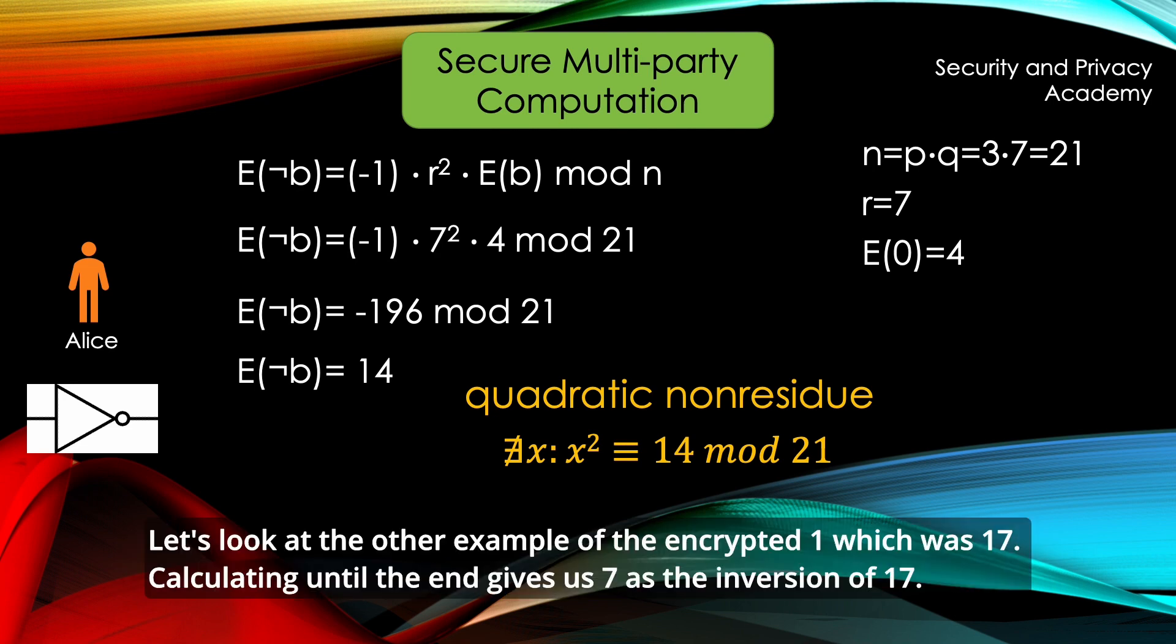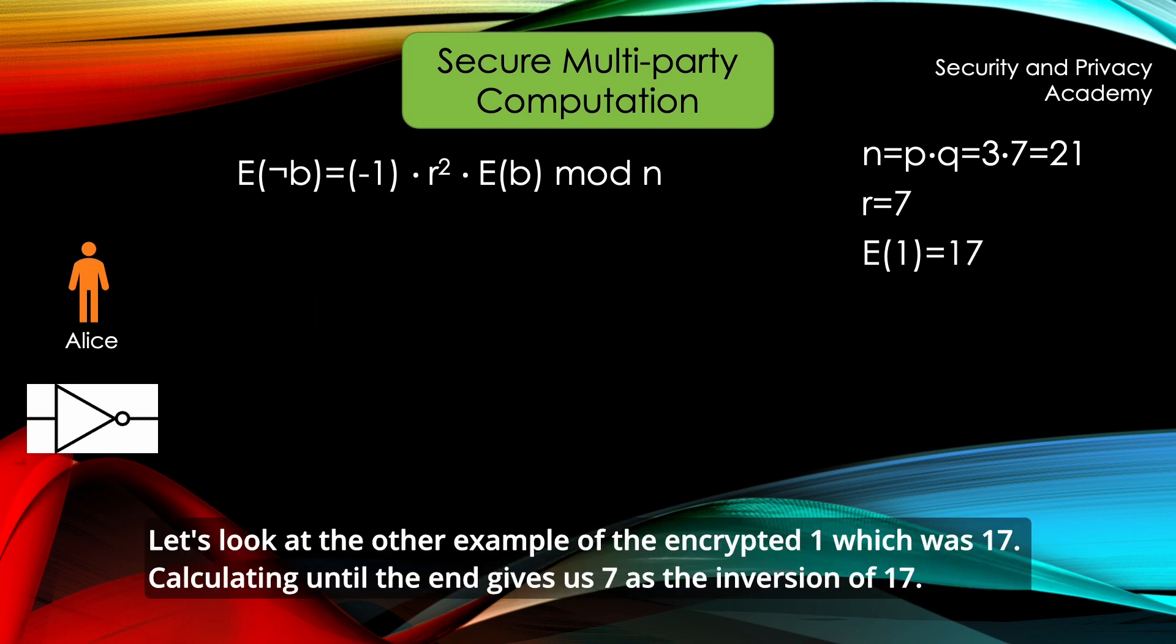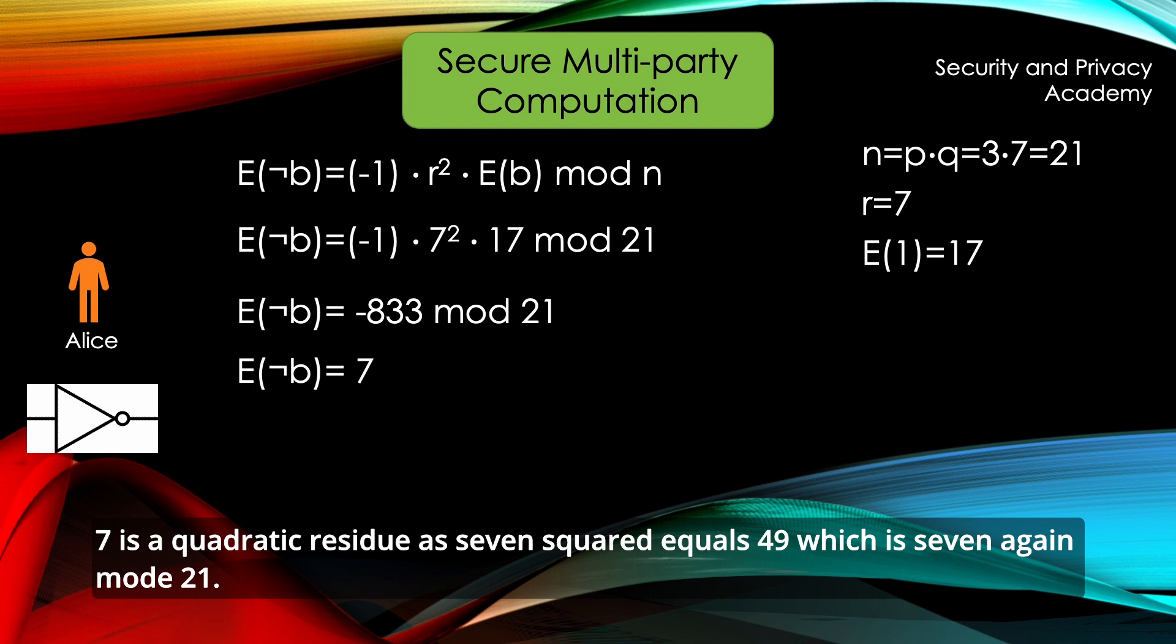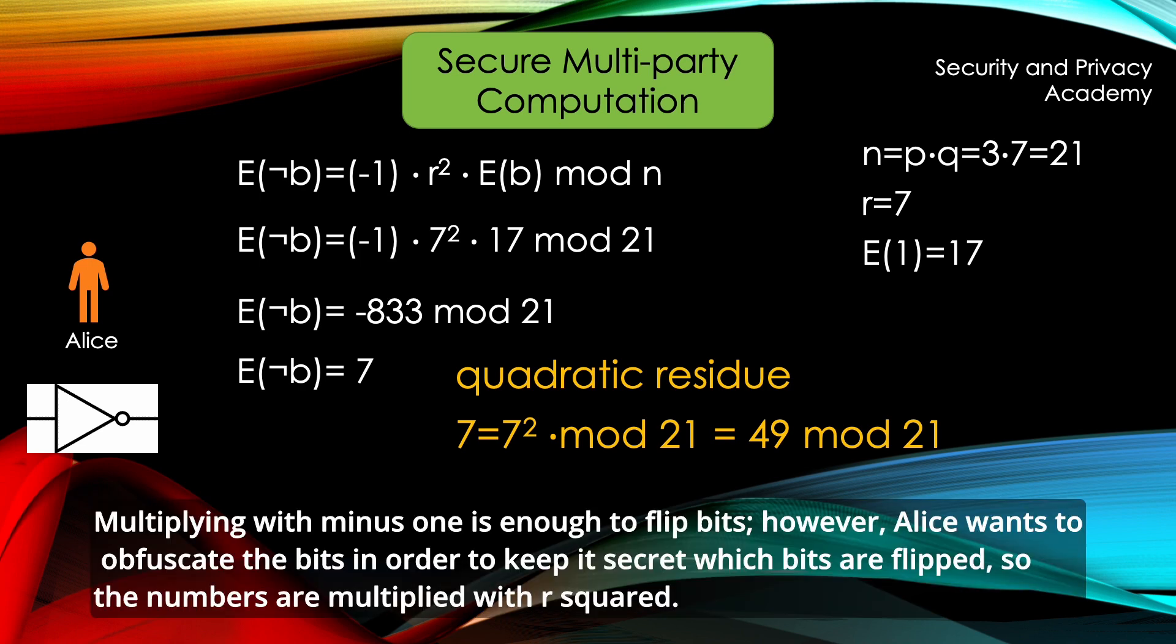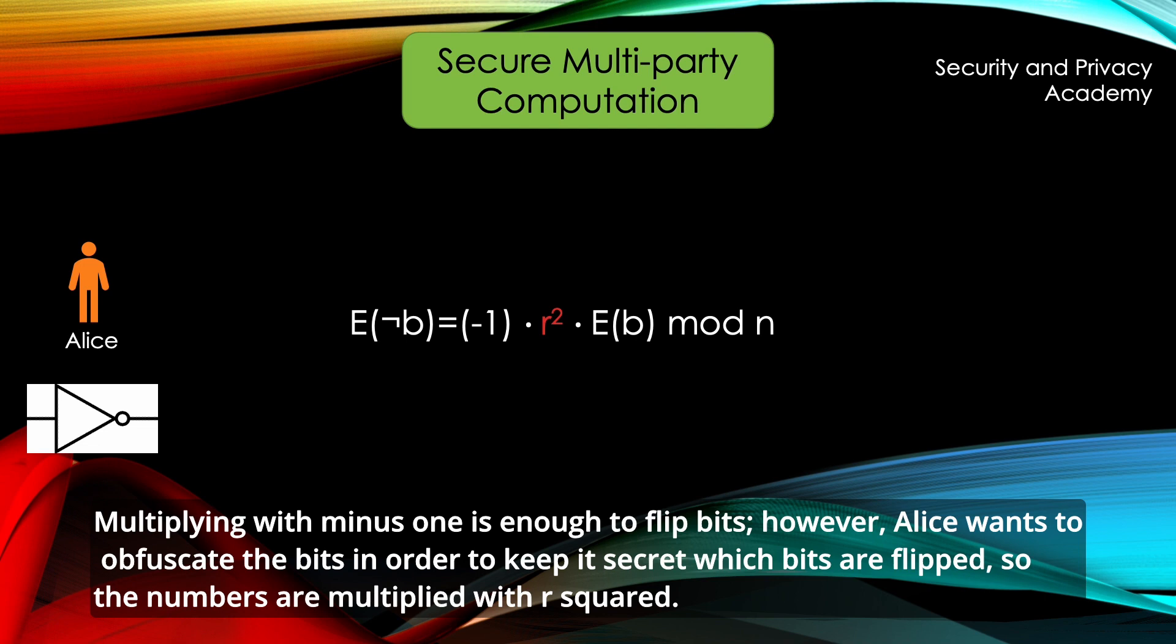Let's look at another example of the encrypted 1, which was 17. Calculating until the end gives us 7 as the inversion of 17. 7 is a quadratic residue as 7 squared equals 49, which is 7, mod 21. So multiplying with minus 1 is enough to flip bits.